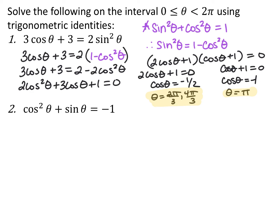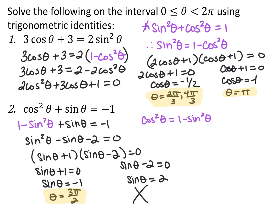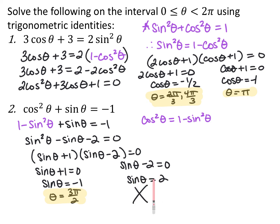For the last practice problem, cosine squared theta plus sine theta equals negative one: since cosine is squared, replace it using the identity cosine squared equals one minus sine squared. After substituting and moving everything to one side, we get sine squared theta minus sine theta minus two equals zero. Factoring gives (sine theta plus one)(sine theta minus two) equals zero, so sine theta equals negative one — giving theta equals three pi over two — and sine theta equals two. Since sine never equals two, that case gives no solution, similar to extraneous solutions we saw with exponential equations.